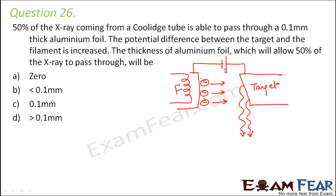The question asks what happens if we vary the potential difference between the filament and the target. When the potential difference is increased, the kinetic energy of the electrons hitting the target also increases. Normally, these electrons enter the target material, lose their kinetic energy, and gradually come to rest.